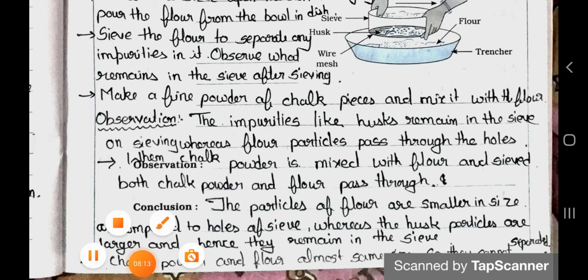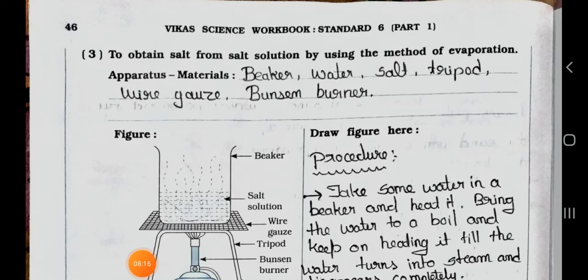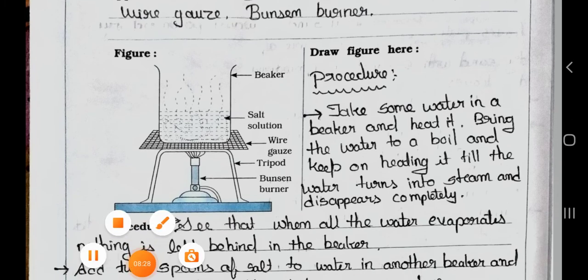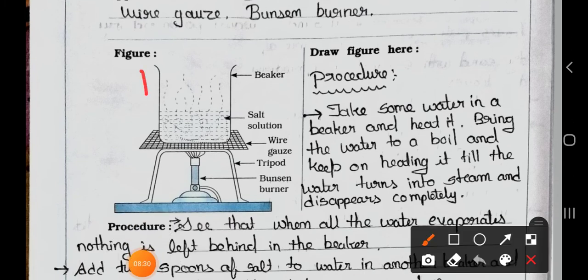And so they cannot be separated. Now see the next page. Now see number 3: To obtain salt from salt solution by using the method of evaporation. Apparatus and materials: Beaker, water, salt, tripod, wire gauze and Bunsen burner. See what is the tripod and Bunsen burner. Here is a beaker with salt solution, it is a wire gauze, here is a tripod and here is a burner.